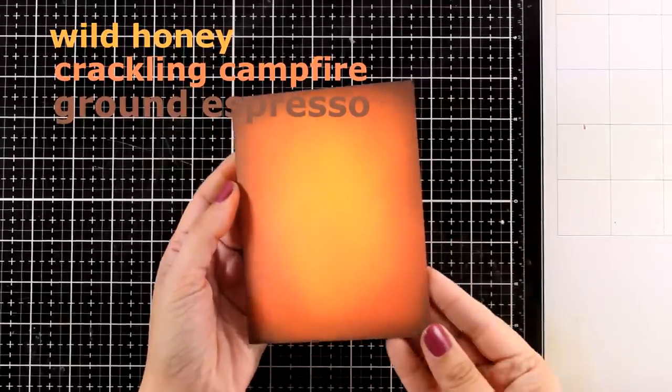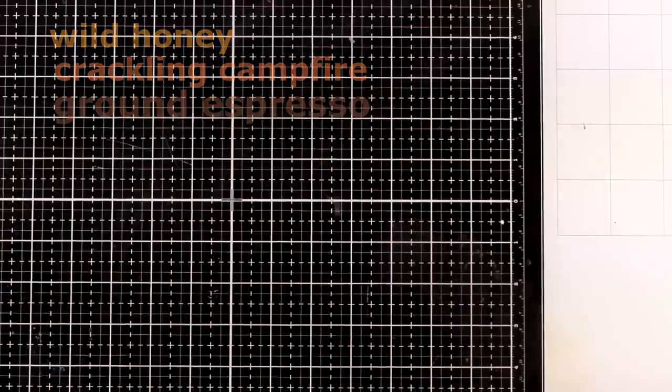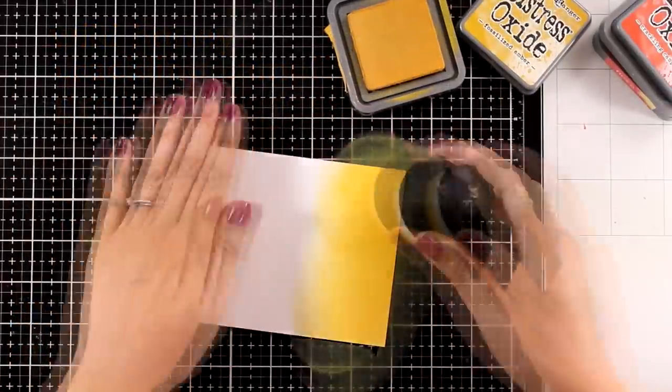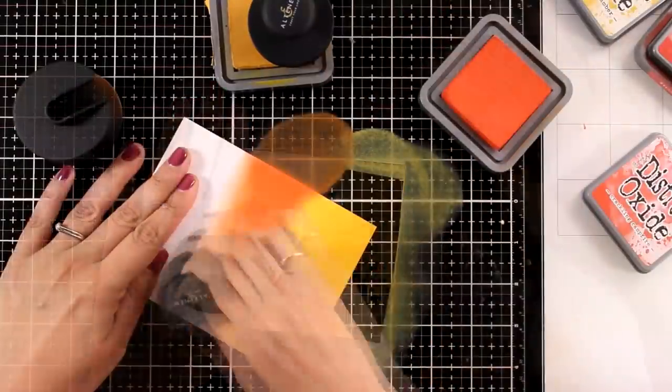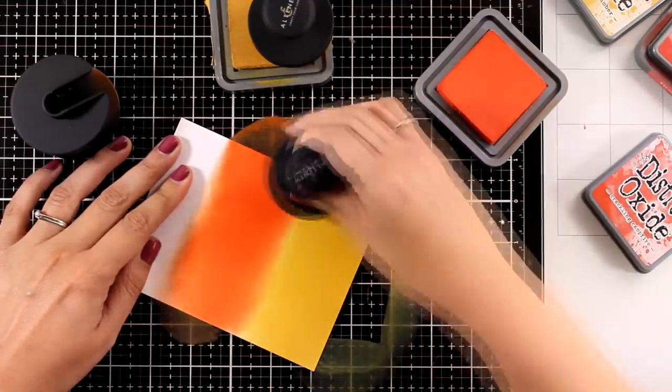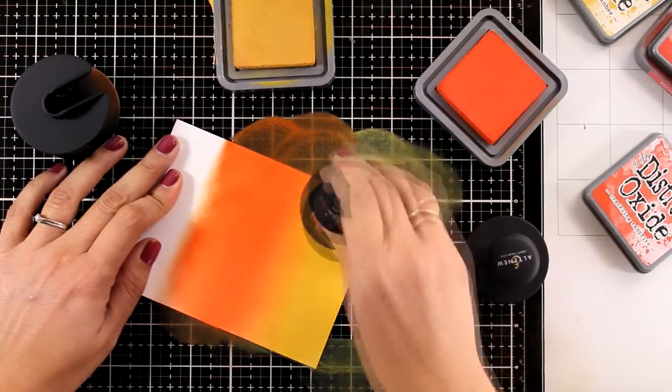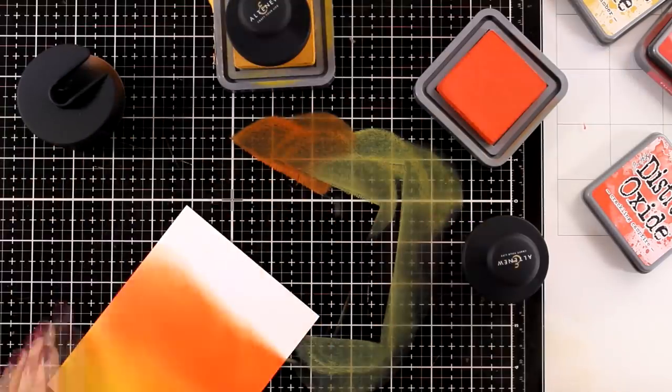So here is the first background. I'm going to create two more and then turn them into cards. For my second background I'm starting with Fossilized Amber, again a lovely shade of yellow. Then I'm going to move on to Crackling Campfire. Yellow with orange go lovely together. You will see that I will be able to eliminate completely that line where those two colors touch.